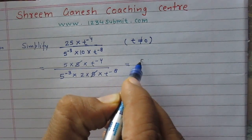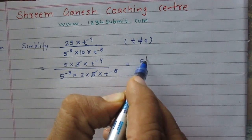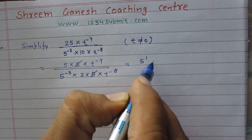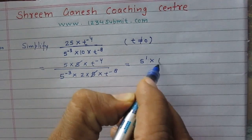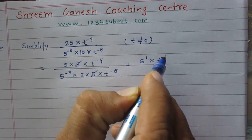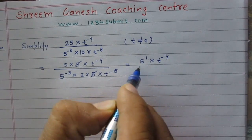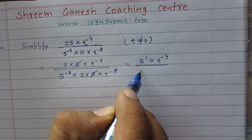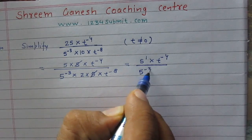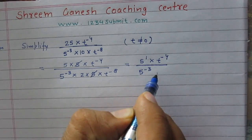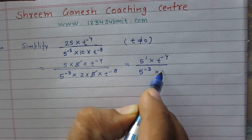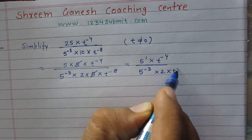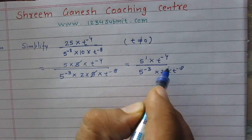We can cancel one 5 in the numerator with the 5 in the denominator directly. We will get 5 raised to power 1, which is 5 itself, then t raised to power minus 4, 5 raised to power minus 3, 2, and t raised to power minus 8.